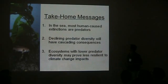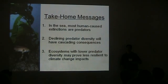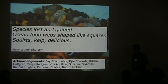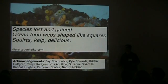The take-home messages from this are: first, in the sea, most human-caused extinctions thus far have been of predators. If you want to look a bit more at how climate change can change these food webs, see my poster. Second, the decline in predator diversity will have cascading consequences for a variety of different systems. And lastly, ecosystems with low predator diversity may indeed have less resilience to future change from climate change. I'll end with a haiku that sums up my dissertation — I urge all of you to check out the dissertation haiku website. It's a wonderful zen exercise. Thank you.